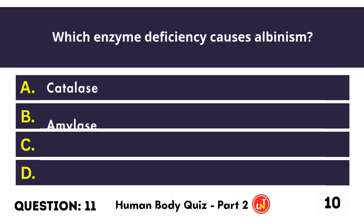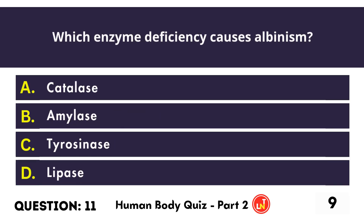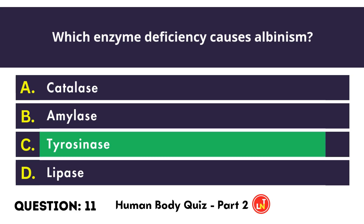Which enzyme deficiency causes albinism? Tyrosinase.